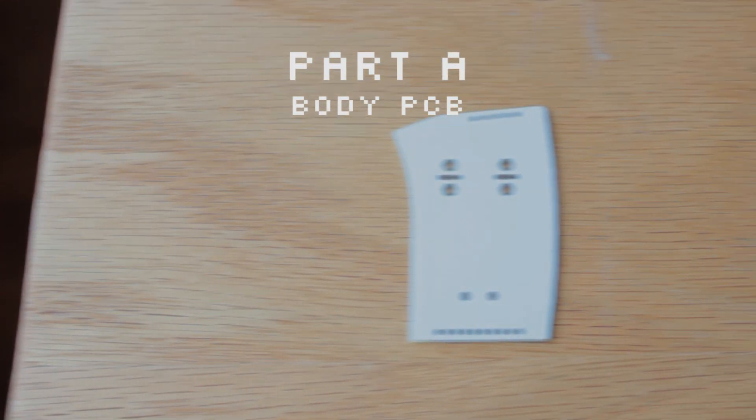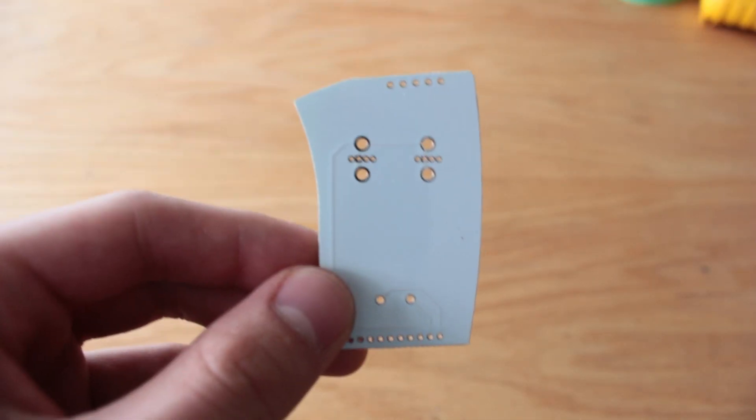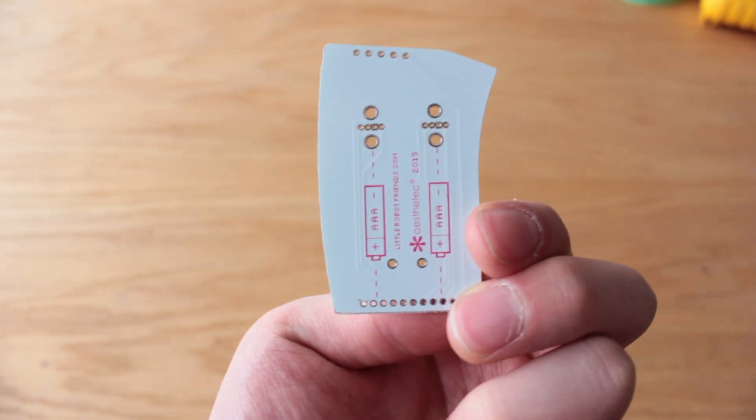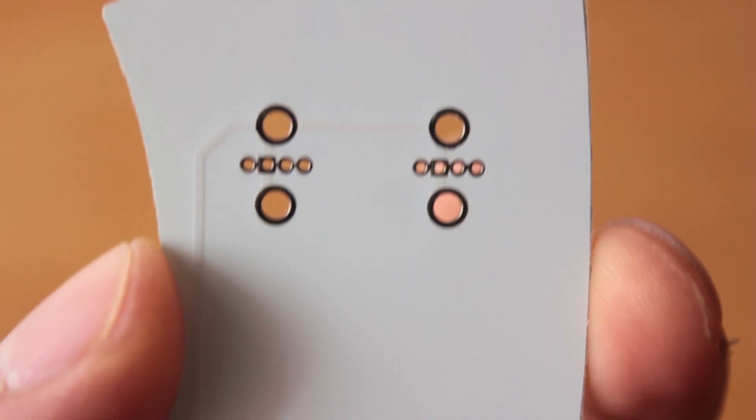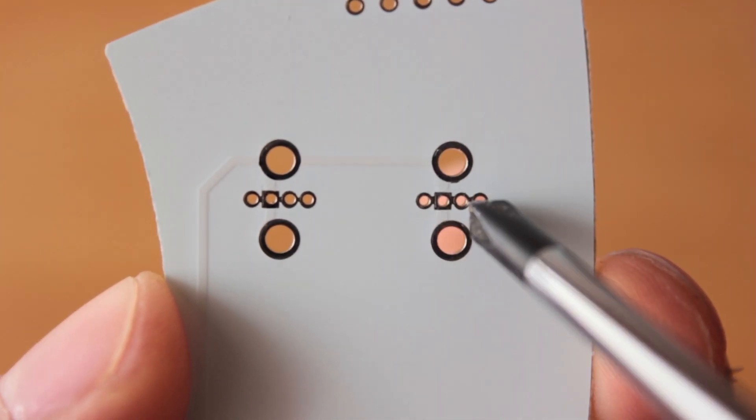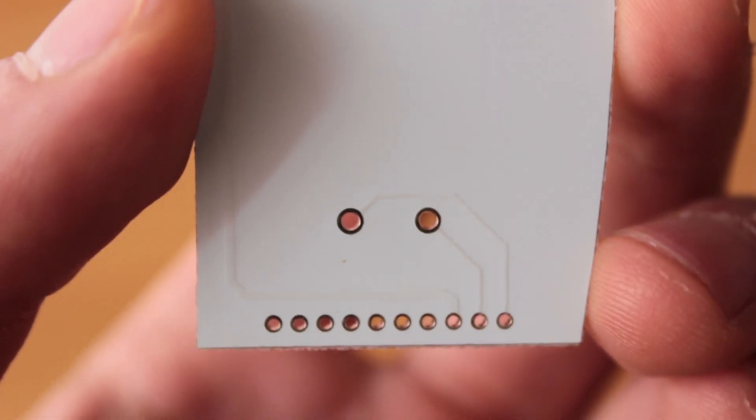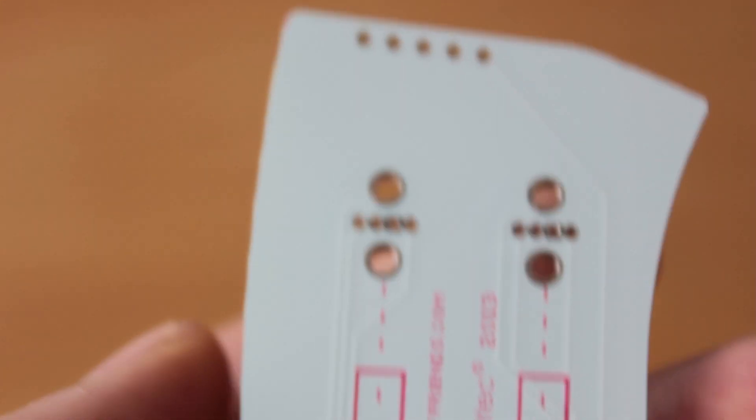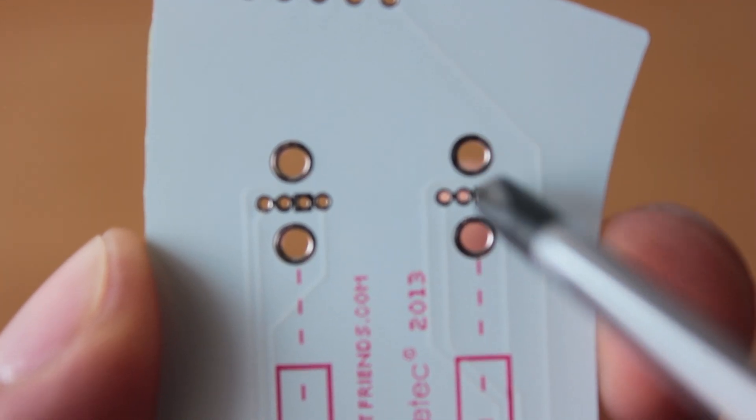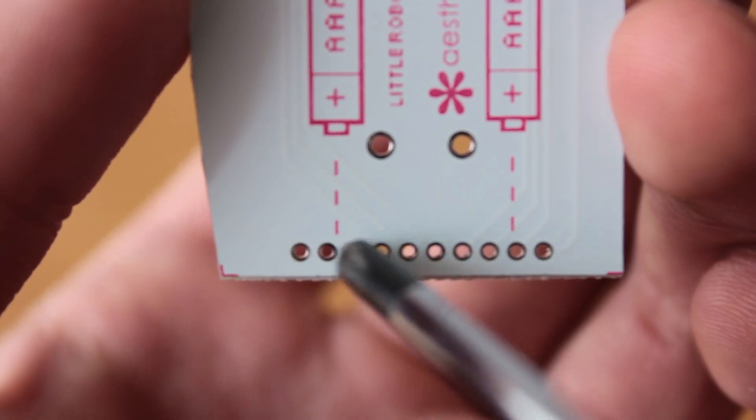So let's make a new friend, starting with part A, the body PCB. Little robot friends come in a number of body shapes, but they all share the same circuit design. These holes are for the springy hairdo. These two sets are for the LED eyes. And the speaker mouth attaches here. On the back, the battery clips fit into these four holes. And the 10 pin connector to the foot PCB attaches here.